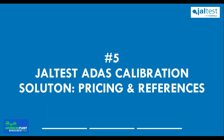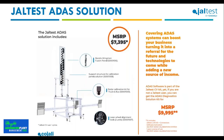We are now in the fifth part of the webinar: pricing and references for the new JALTES calibration solutions. There are four main parts: the support structure for the calibration panels, the radar calibration kit for trucks and buses, the laser wheel alignment tools — which come in two units for both sides of the vehicle — and the Bendix Wingman Fusion panel, which will likely be the most used panel for static calibrations on the North American market.